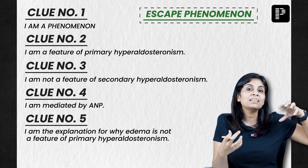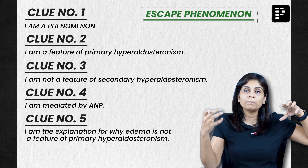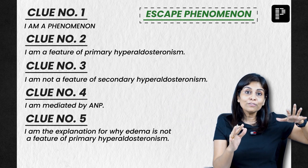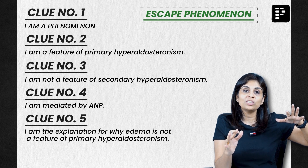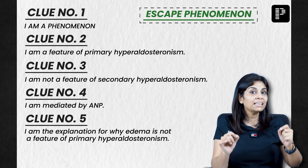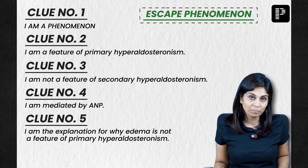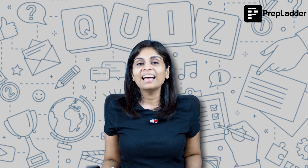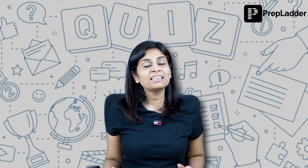Atrial stretch receptors release atrial natriuretic peptide, which causes diuresis. This is never a feature of secondary hyperaldosteronism, wherein the primary cause is a decrease in the intravascular volume. I hope that is clear and interesting. Wait until I come back with another video with a similar set of clues and an interesting pathway, enzyme, or disorder.